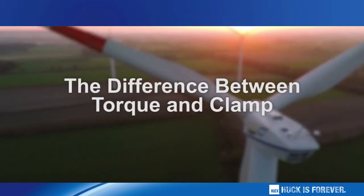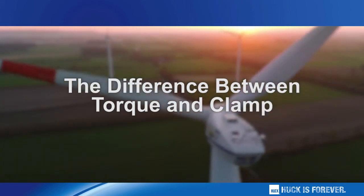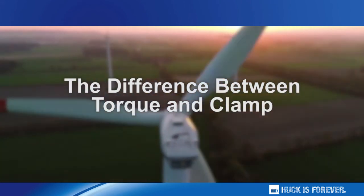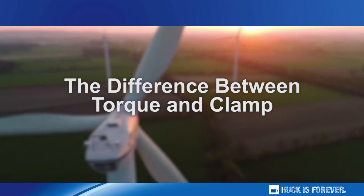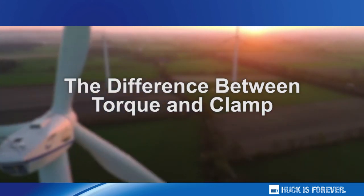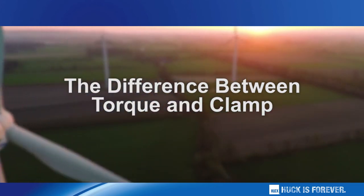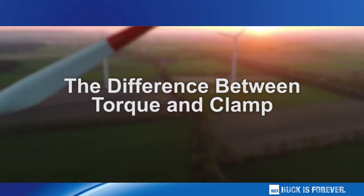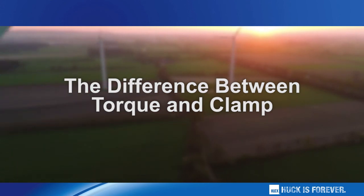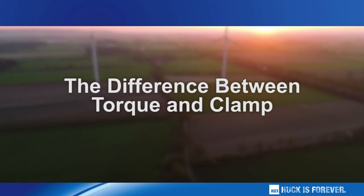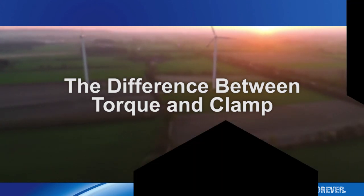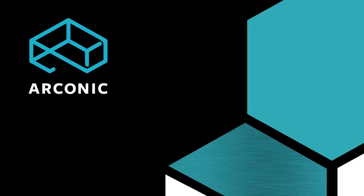The difference between torque and clamp can be the difference between a vibration-resistant joint or joint failure. In wind turbines, reliable, maintenance-free joints are critical and can only be achieved through advanced tension-induced fastening, like that provided by bobtail huck bolts. Arconic Fastening Systems — Innovation Engineered.